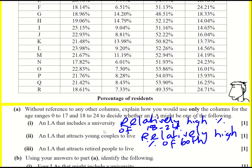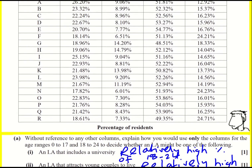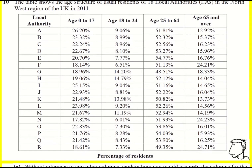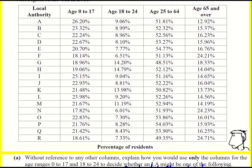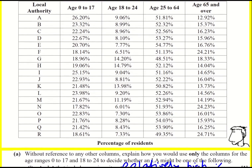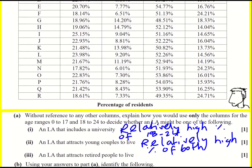And then finally for part A, a local authority that attracts retired people to live. That's going to be when there's actually a higher percentage in the right-hand column, but remember the question is asking us about the first two columns, so it's going to be a lower proportion of both.